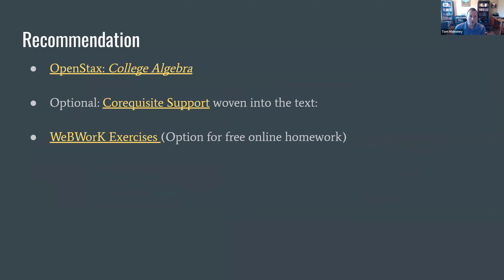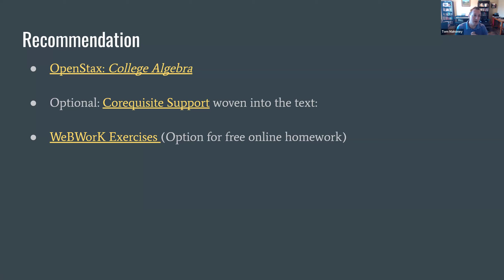My final recommendation — I recommend the OpenStax College Algebra as the final recommendation. I can share this slideshow so you can get the actual links, but just typing that into Google will bring it up as the top result. The optional co-requisite support is great for classes that need a little bit more remediation. At Emporia State, we have a three-credit college algebra 110, and also a five-credit hour college algebra 111 with extra review — for that review section I'd recommend the co-requisite support version. I've also linked the GitHub repository that has all the WebWork exercises available if people want an online homework solution.